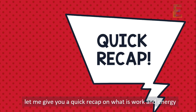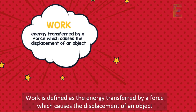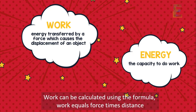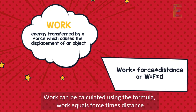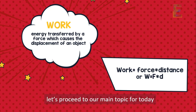Work is defined as the energy transferred by a force which causes the displacement of an object, and energy is simply defined as the capacity to do work. Work can be calculated using the formula: work equals force times distance. Now that we have defined work and energy, let's proceed to our main topic.